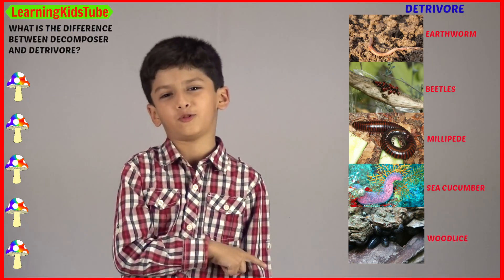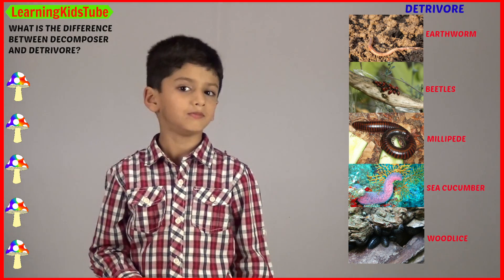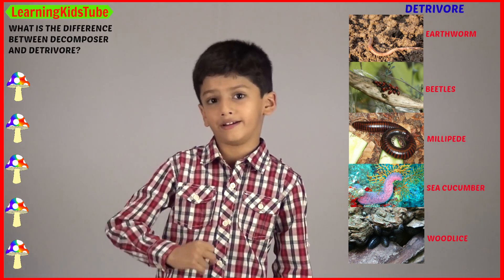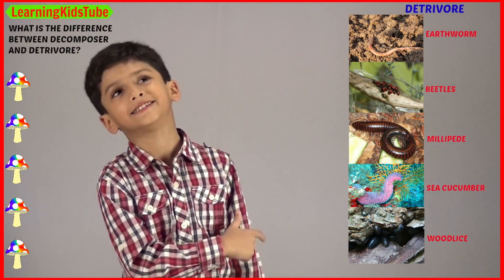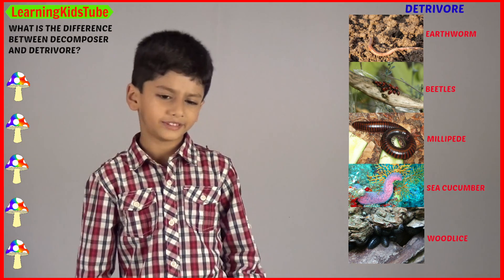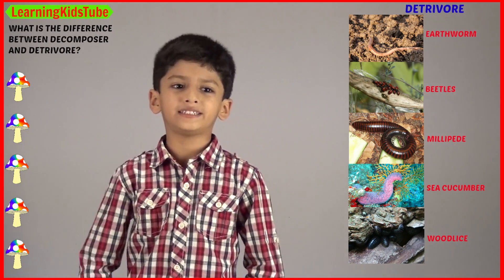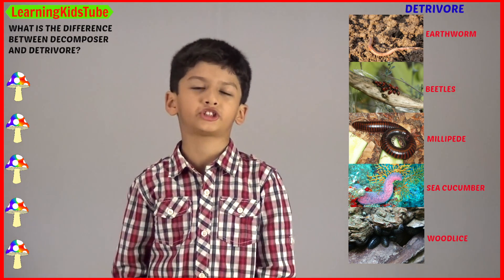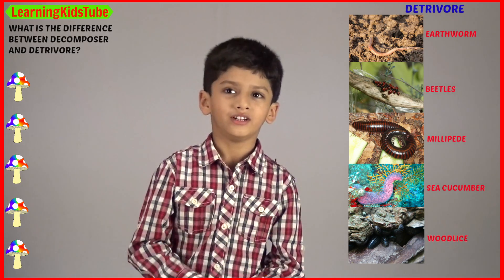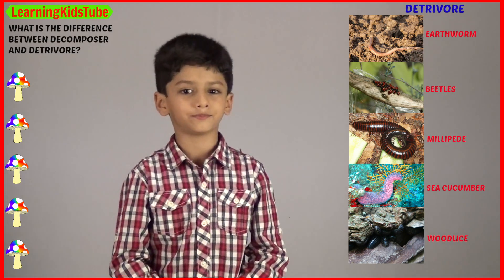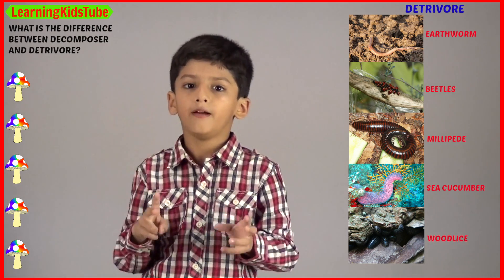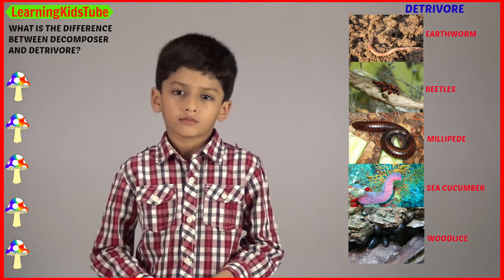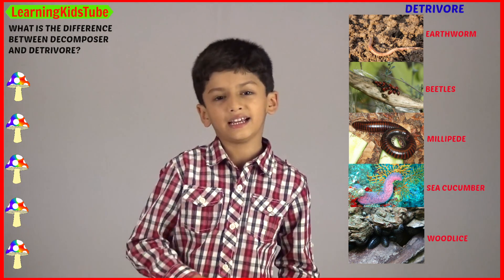Here is one more question: what is the difference between decomposers and detritivores? Detritivores break down their food into its original form through an internal digestion process. Examples of detritivores are earthworm, beetles, millipede, sea cucumber, wood lice, etc.